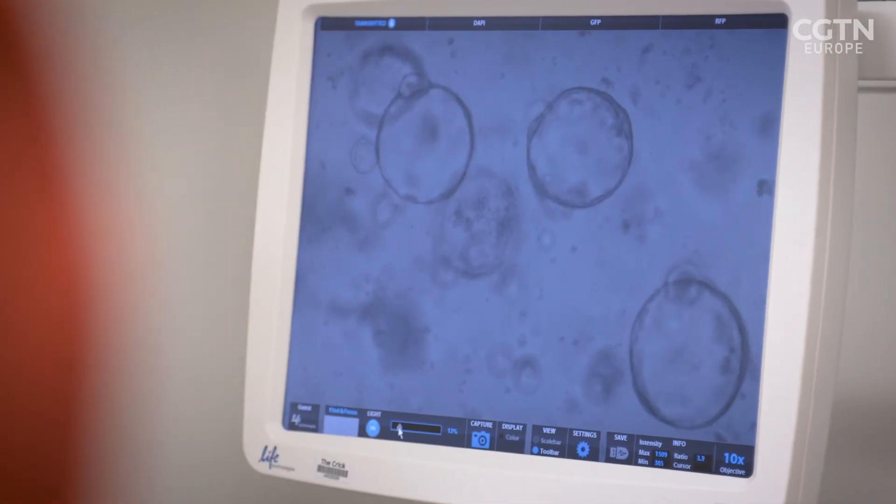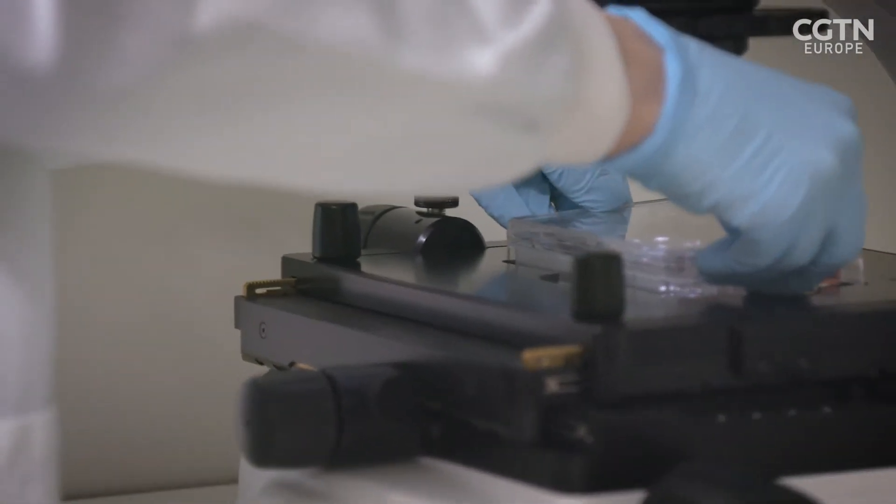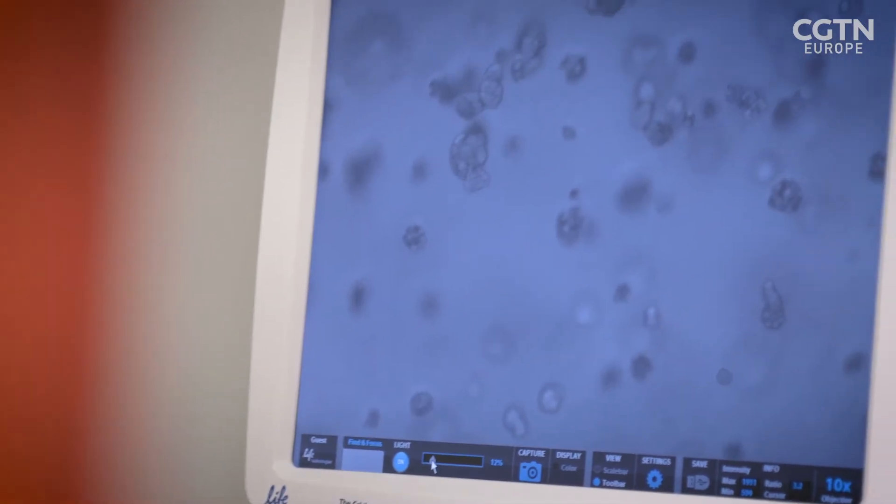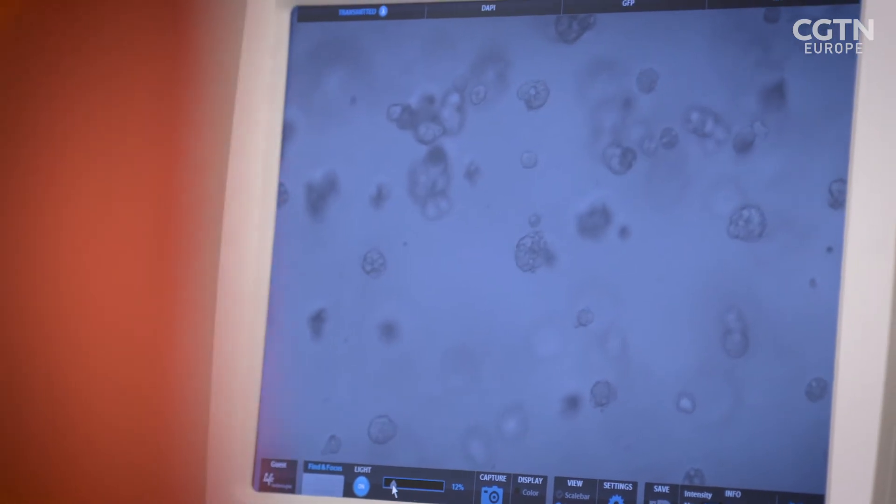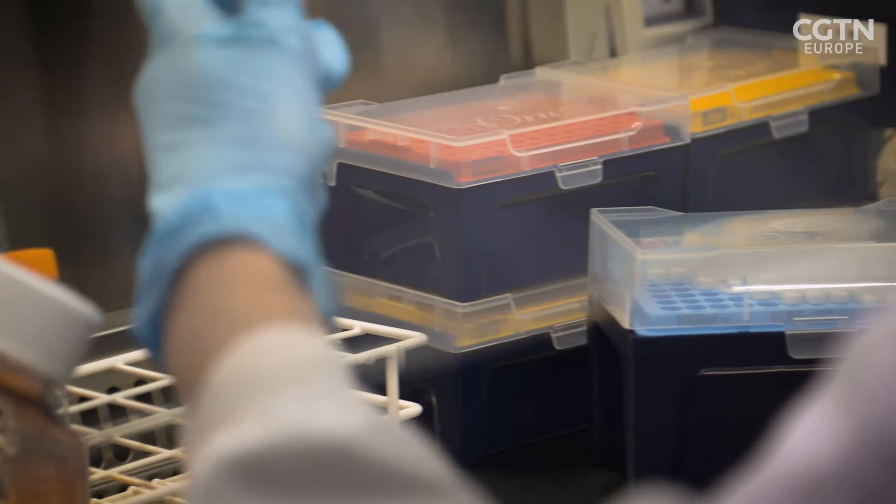Once we've seen how mouse organoids are grown, and in much the same way, organoids can be created from human stem cells. These have a number of research uses, including drug screening and for developing personalized cancer treatments for patients.